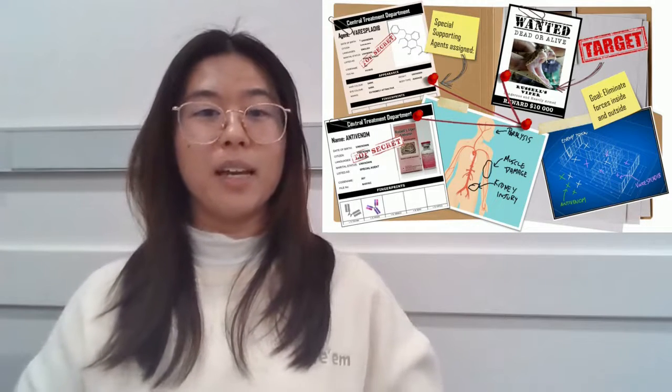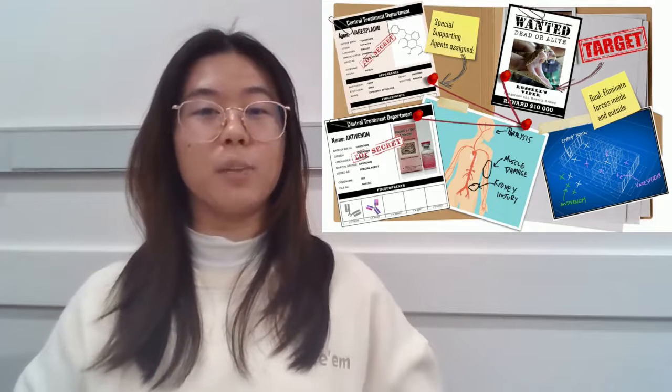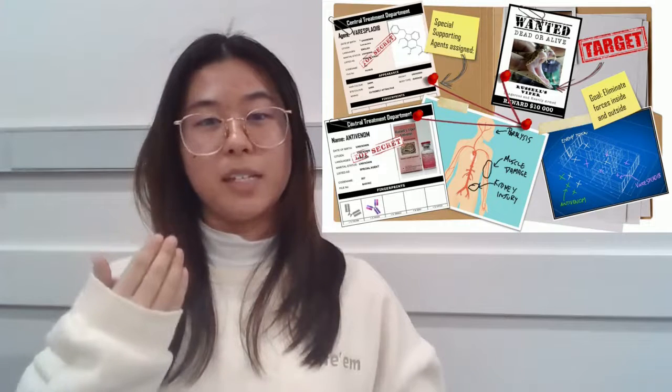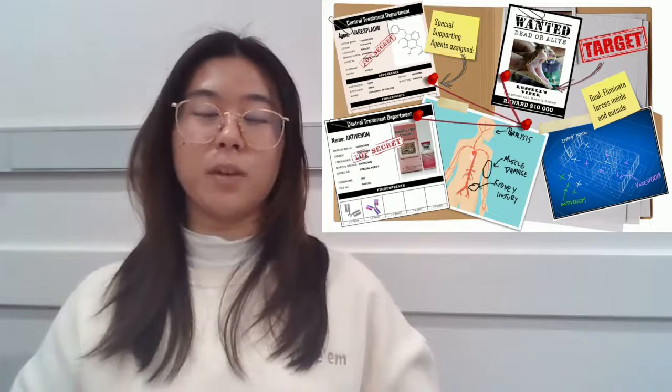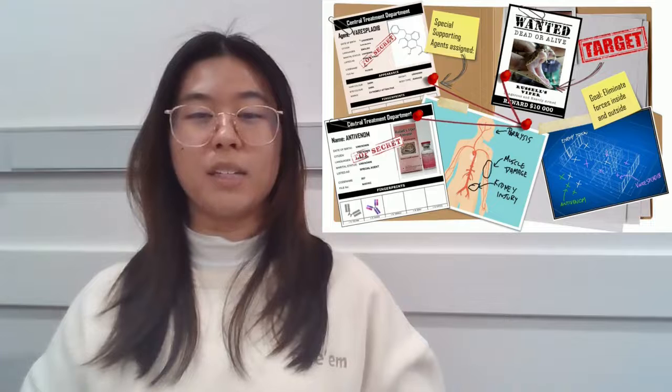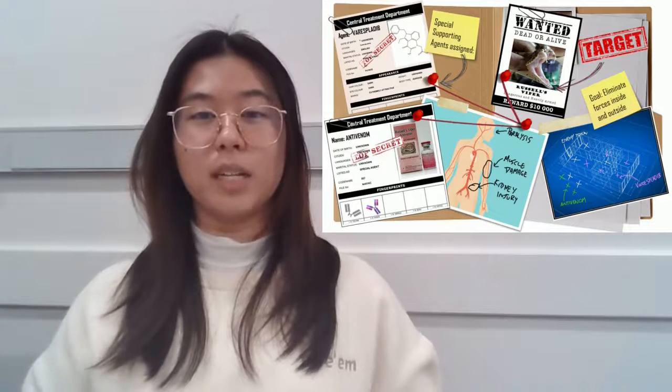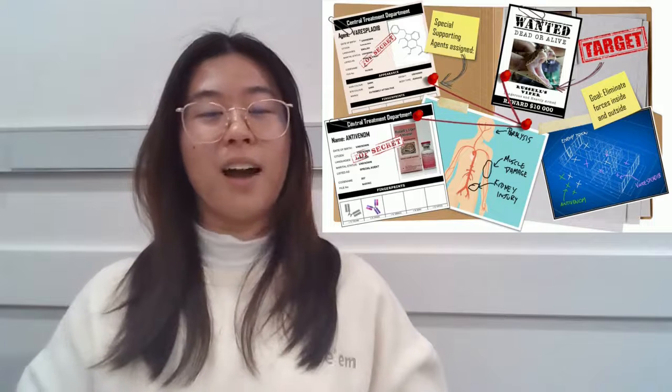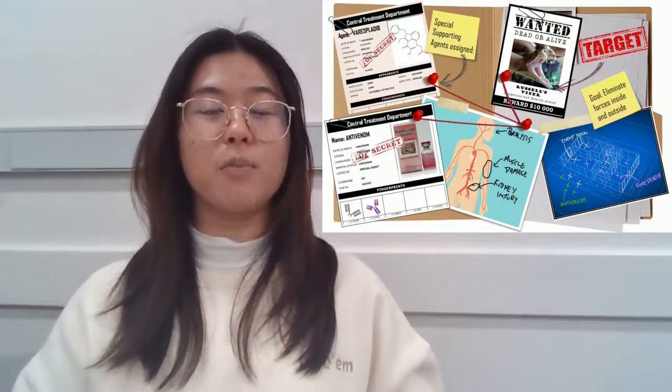The venom messes with the ability of your blood to clot, leading to internal bleeding. You start to lose control of some parts of your face and your limbs stop obeying your commands as the toxin works its way into dissolving your muscles and blocking your kidneys. Unfortunately for you, the Russell's viper is a highly venomous snake that kills hundreds of people every year.